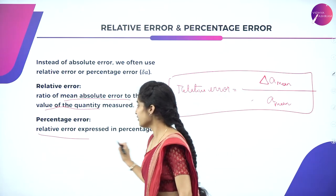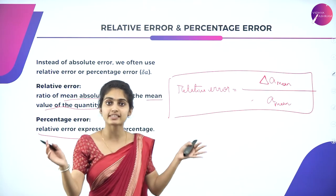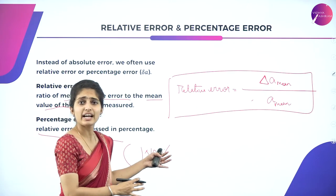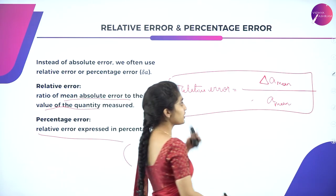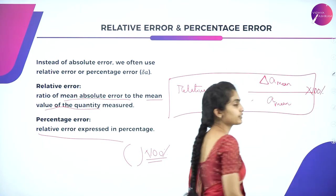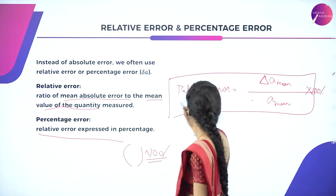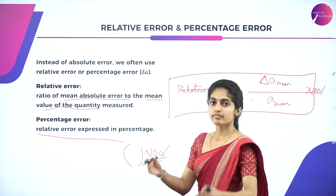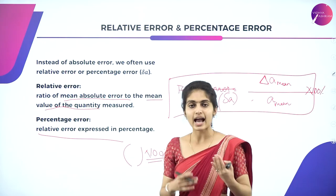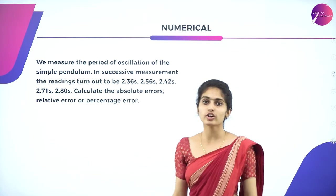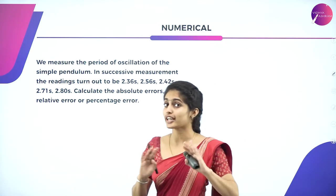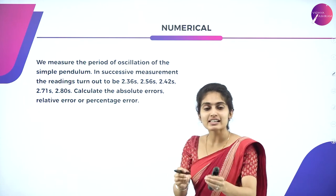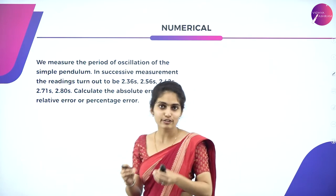Now let us solve a numerical problem. We measure the period of oscillation of a simple pendulum. In successive measurements, the readings are: 2.36 s, 2.56 s, 2.42 s, 2.71 s, and 2.80 s. We have to calculate the absolute error, relative error, and percentage error. Read the question properly, write down the given data, substitute into the formula.